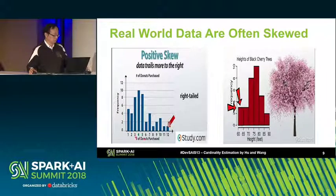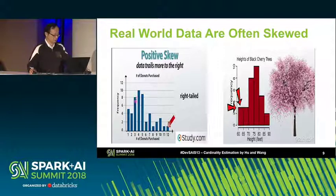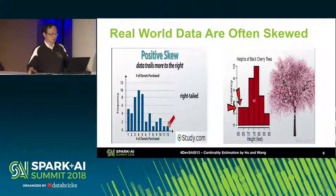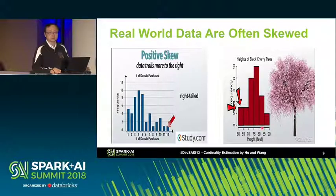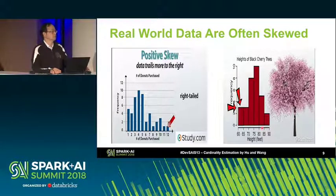But as we know, in the real world, data are often skewed. For example, for a donut shop, if you find out the number of donuts people may buy, it will skew around between three and four. And for a black cherry tree, most trees will reach a height between 70 and 80 feet. So basically, data skew is intrinsic — it is inherent in real-world data.